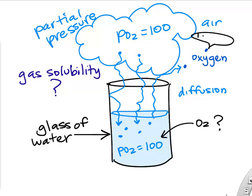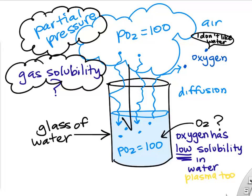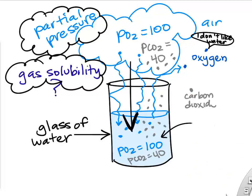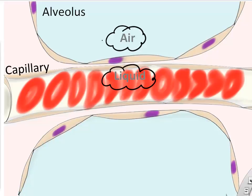The other thing that helps determine how much gas will go from air into liquid is the solubility of that gas in the liquid. Water and plasma, since it's mostly water, has a fairly low solubility for oxygen — so even though the PO2s equalize, not a lot of oxygen molecules get into that water or plasma. Carbon dioxide, on the other hand, has a higher solubility in water. So there will actually be more carbon dioxide dissolved in the plasma of our blood because it has a higher solubility in water, even though sometimes the PCO2 is lower. We'll see why that's important later.